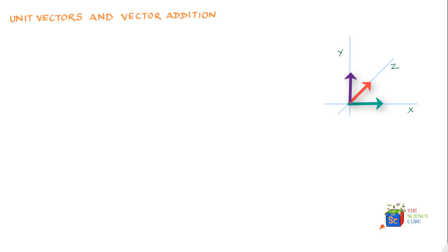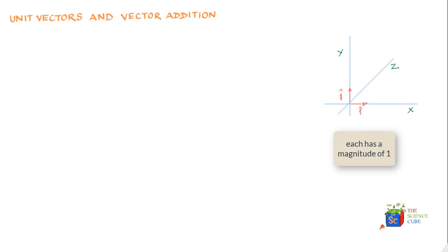Unit vectors are vectors that have magnitude 1, and their only purpose is to give direction. In a coordinate system with x, y, and z axes, the unit vector on the x-axis is labeled i, the unit vector on the y-axis is labeled j, and the unit vector on the z-axis is labeled k. Each has a small cap on top to indicate it is a unit vector.